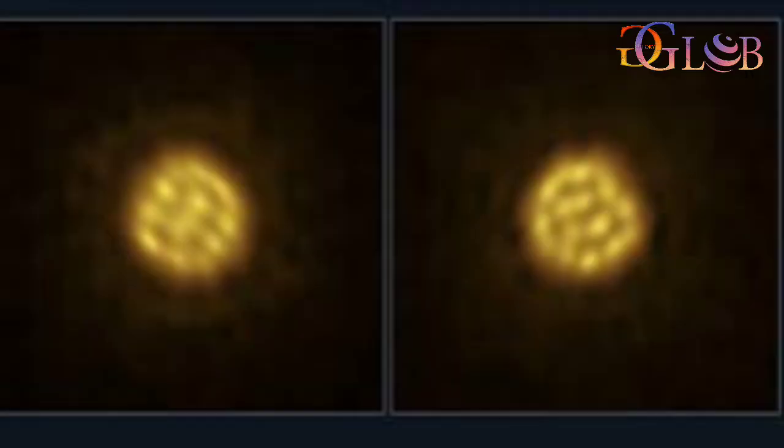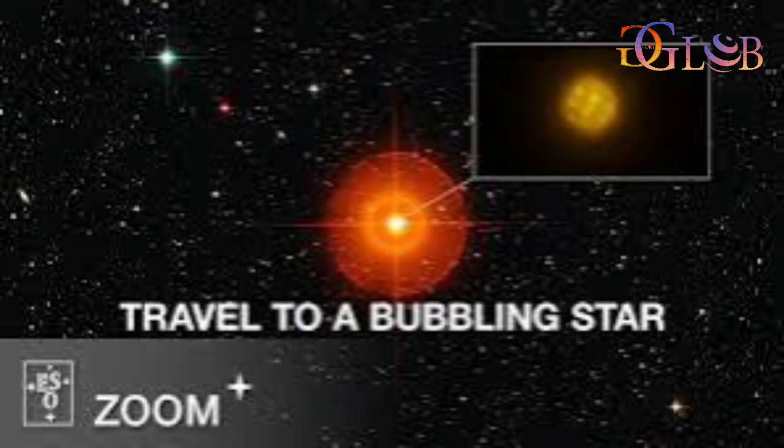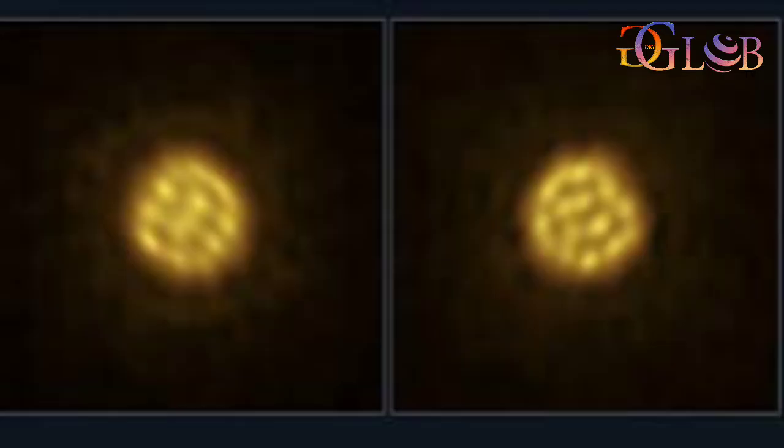This mixing motion, known as convection, distributes the heavy elements formed in the core, such as carbon and nitrogen, throughout the star. It is also thought to be responsible for the stellar winds.